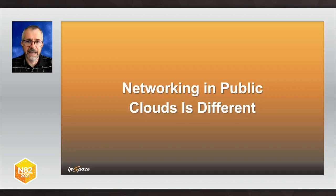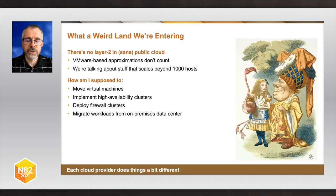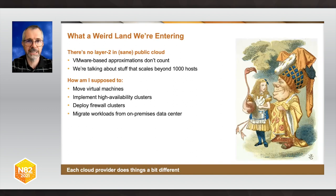Networking in public clouds is different from what you're used to. There is no Layer 2 in any sane public cloud — there is at least one not-so-small cloud provider now offering Layer 2, that's why I say 'sane public cloud.' I'm not counting people running VMware and calling that a public cloud, because we're talking about stuff that scales beyond approximately a thousand hosts, which is the scalability limit of any VMware solution I've seen so far.